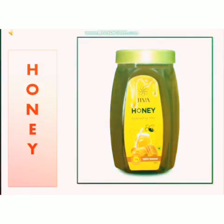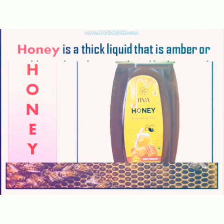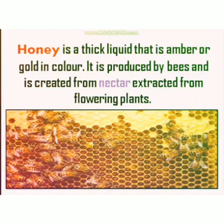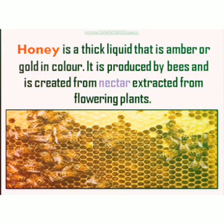Honey is a sweet juice or material obtained from honeybees. Honeybees make honey from nectar. Honey is a thick liquid that is amber or golden-brown in color, as you can see from the picture. It is produced by bees and is created from nectar extracted from flowering plants.